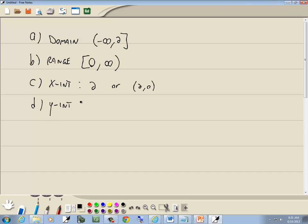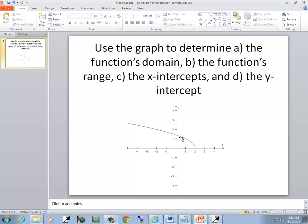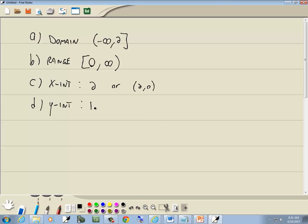Our y-intercept is where it touches or crosses the y-axis, which looks like 1.4 maybe. So I could write 1.4, or if you want to write in point form, that's fine too. It would be 0, 1.4. And those are our answers.